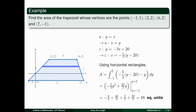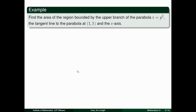We need to identify, upon seeing the plane region, what is the best method to use — vertical rectangles or horizontal rectangles. For the next example: Find the area of the region bounded by the upper branch of the parabola x = y², the tangent line to the parabola at (1, 1), and the x-axis.